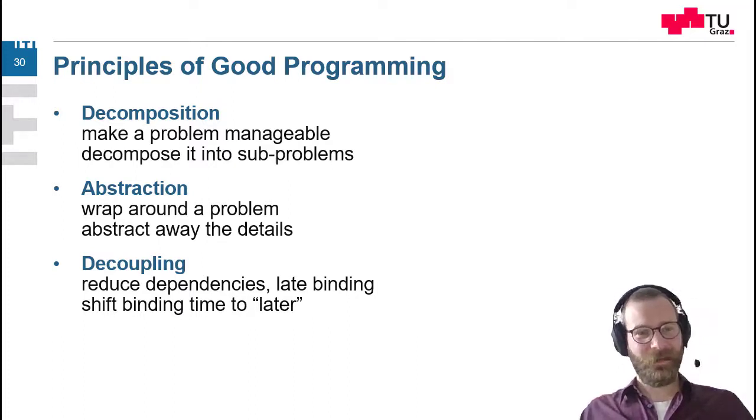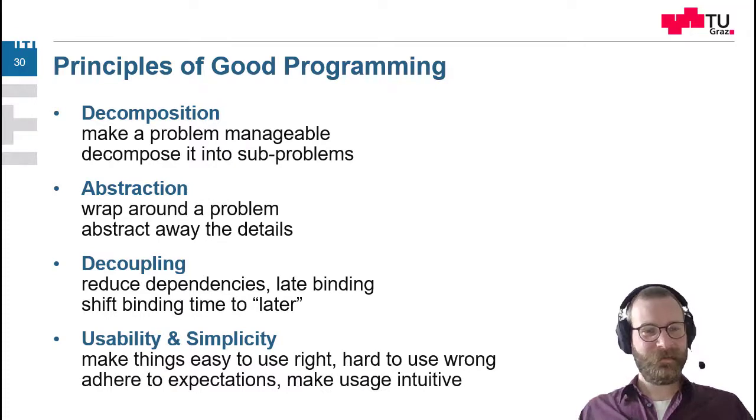Also, decoupling could mean sometimes during programming, we don't know how things will work out. And we don't know which, for example, sorting algorithm we are going to use. Maybe we should shift this decision to later. Or, for example, we don't know how the graphical user interface might look like. Maybe we leave this to the user itself. The last thing is usability and simplicity. So we should make things easy to use right and hard to use wrong, which is also a very famous quote.